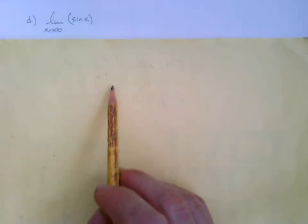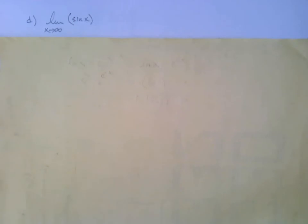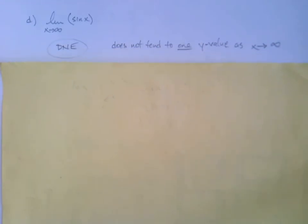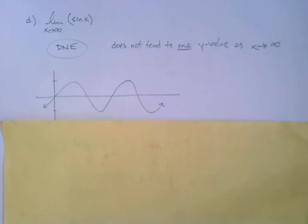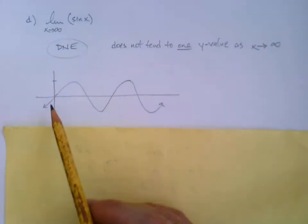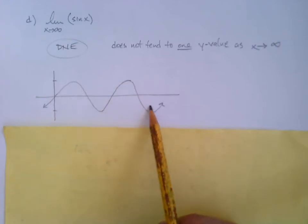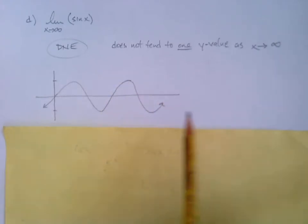Sine of x oscillates — it has that periodic motion, staying between negative one and one. So this limit does not exist. For a limit to exist, it needs to be going to one location: either a horizontal asymptote, infinity, or negative infinity. Sine x does not tend to one y-value as x approaches infinity; looking at the graph, it just repeats that pattern and never levels off.